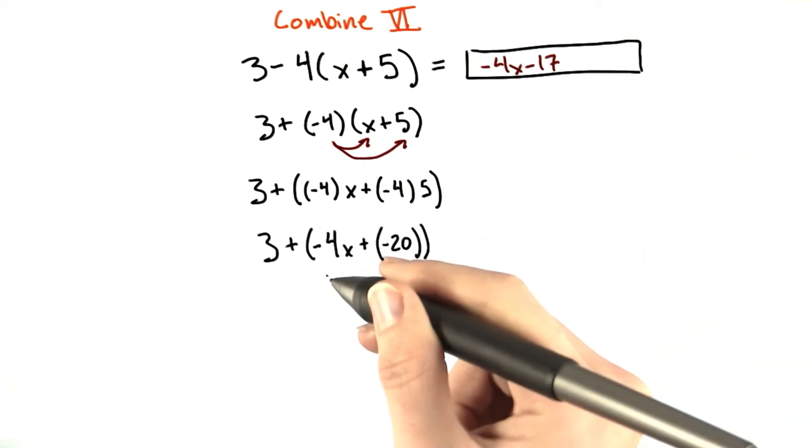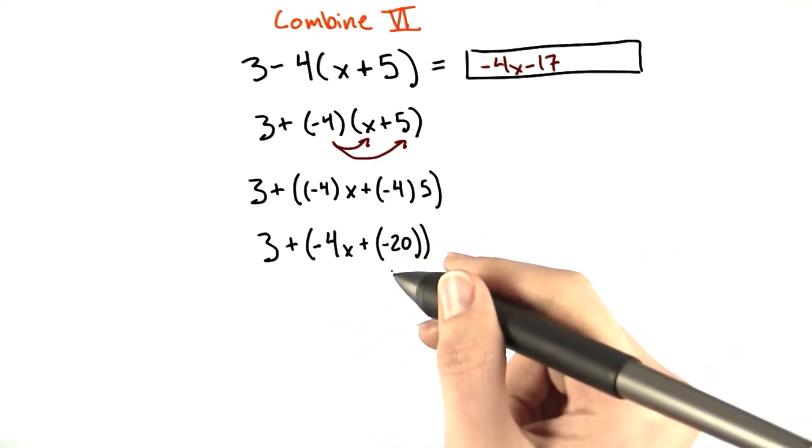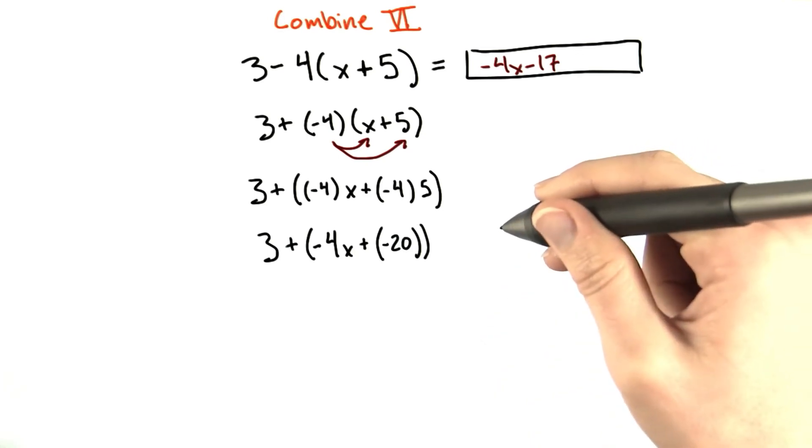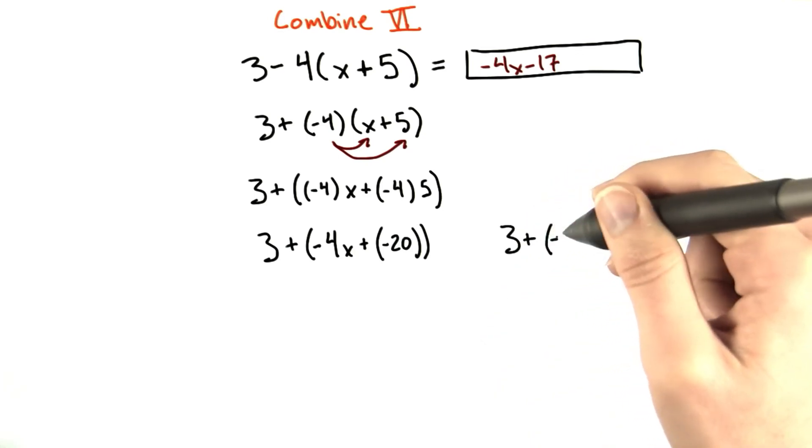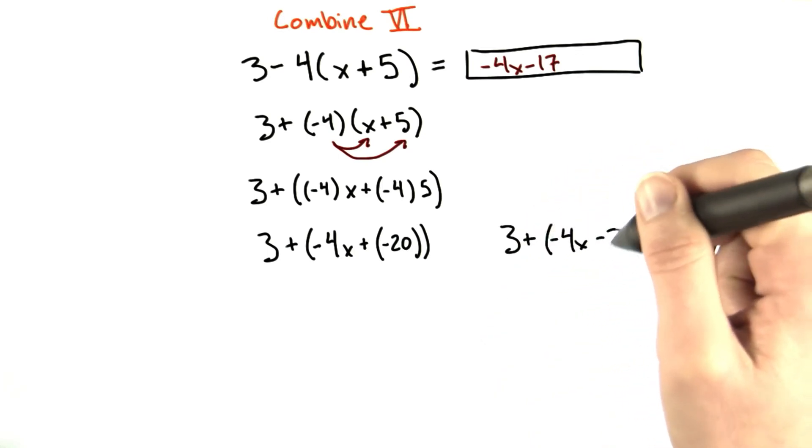This becomes 3 plus negative 4x plus negative 20, which is the same thing as 3 plus negative 4x minus 20.